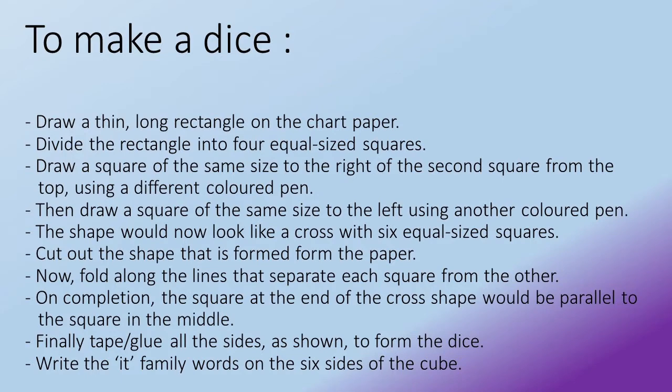Then draw a square of the same size to the left using another colored pen. The shape would now look like a cross with six equal-sized squares.